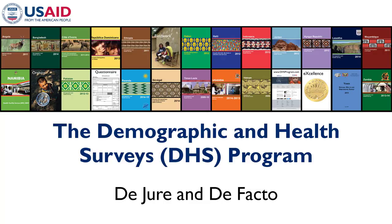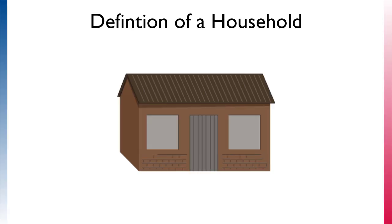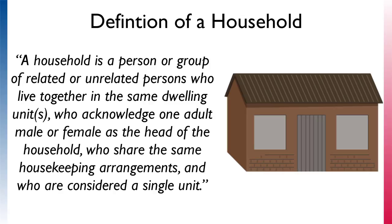Welcome to the DHS program video on de jure and de facto. Before talking about de jure and de facto, it is important to understand the DHS definition of a household. In technical terms, a household is a person or group of related or unrelated persons who live together in the same dwelling unit or units, who acknowledge one adult male or female as the head of the household.